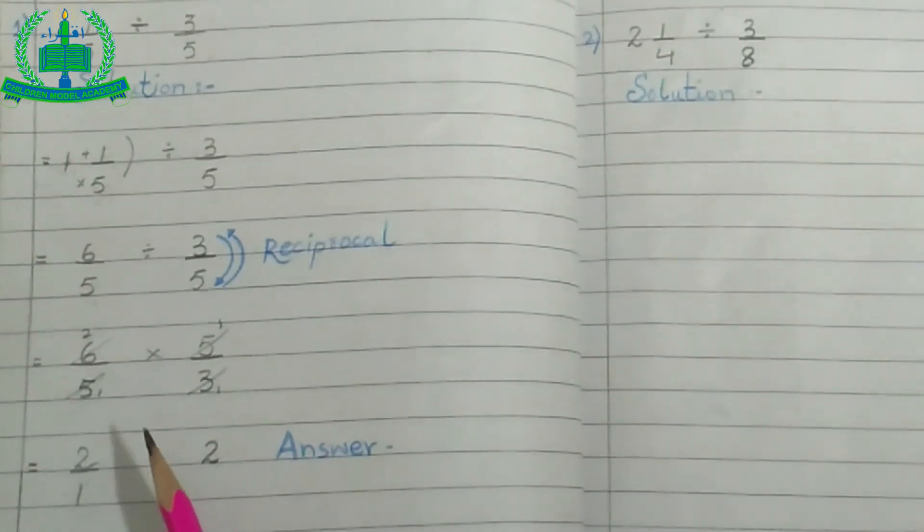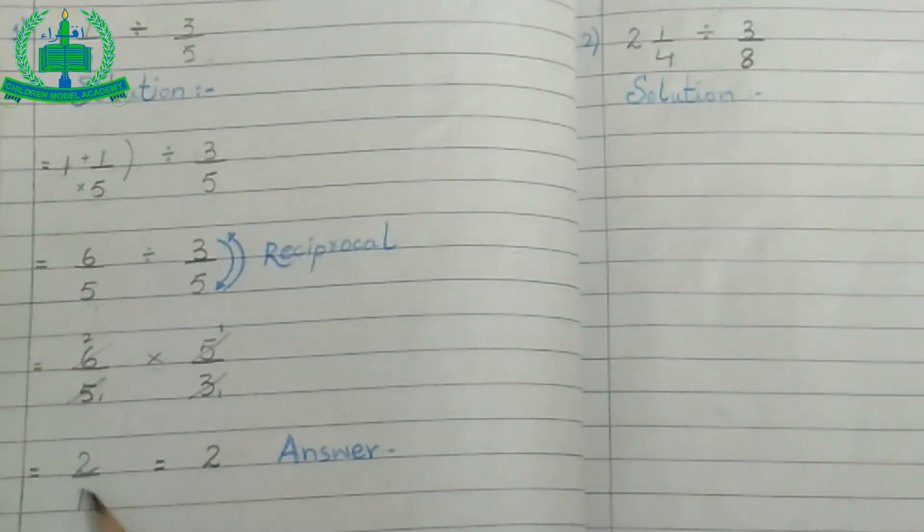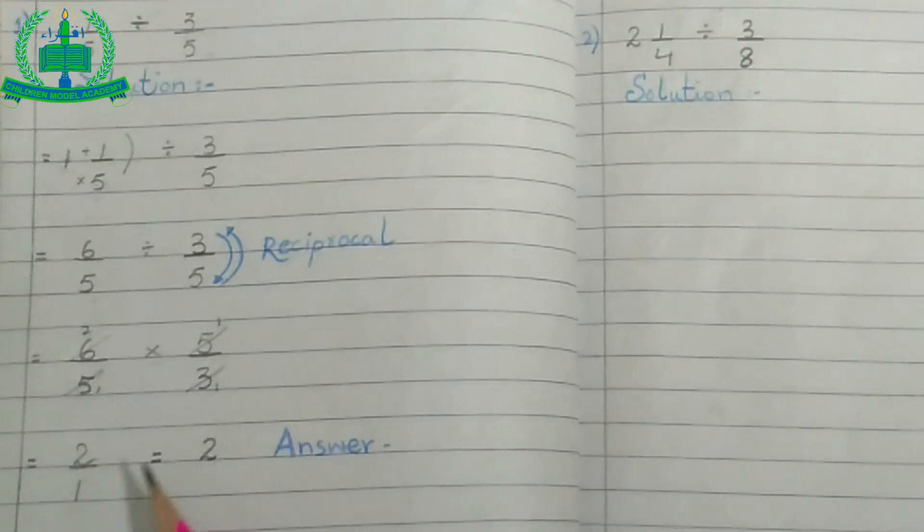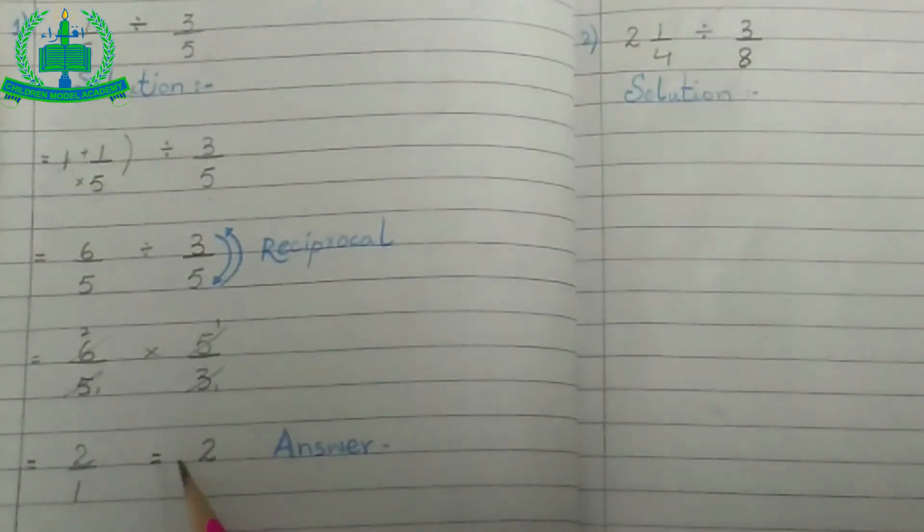2 upon 1. अगर answer में denominator 1 हो, तो denominator show नहीं करते हैं, तो answer is 2.